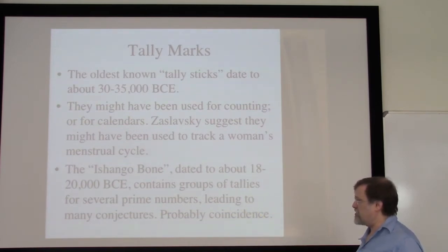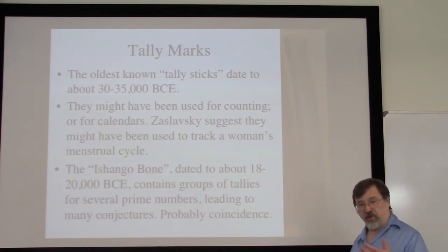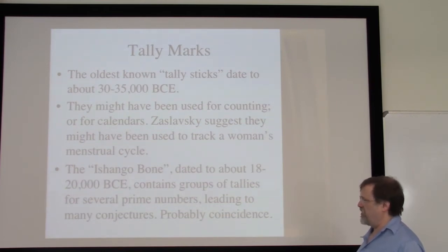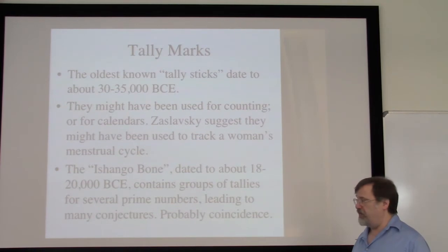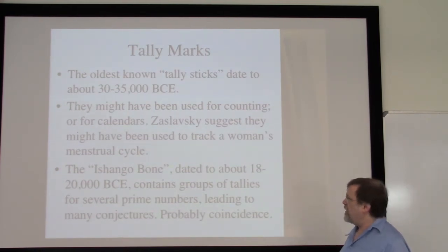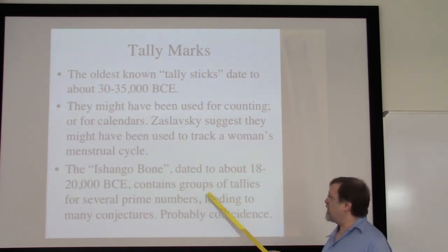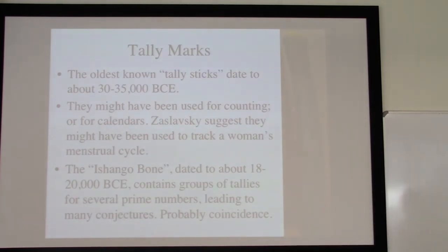There are some marks in the center of the Ishango bone which look like doubling things — a five and a ten, a four and an eight. The use of doubling turns out to be fairly important in Egyptian number systems much later, around 2000 BCE, as part of the algorithm the Egyptians use for multiplication. The Ishango bone itself comes from the Ishango region, roughly on the border of the Congo and Uganda, and is one of the headwaters of the Nile. So it's conceivable that this doubling is actually related to much later Egyptian cultures, though even that is pretty wild speculation.